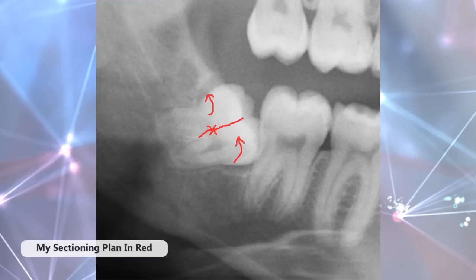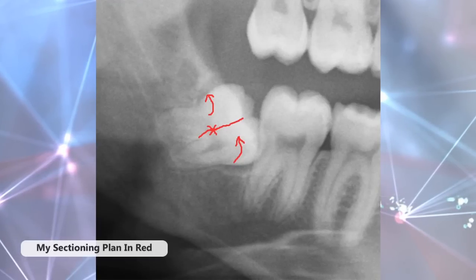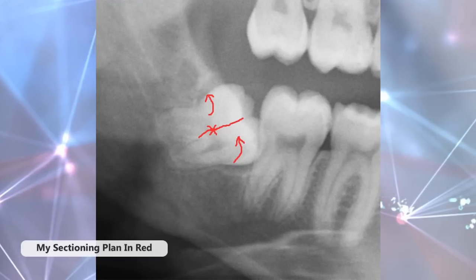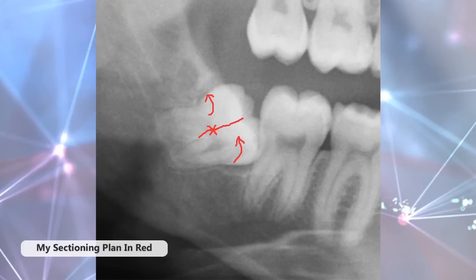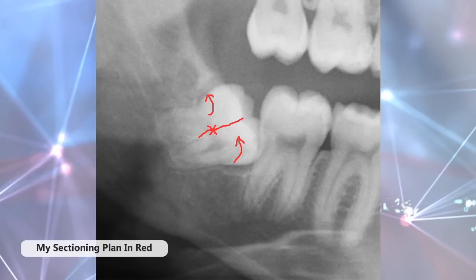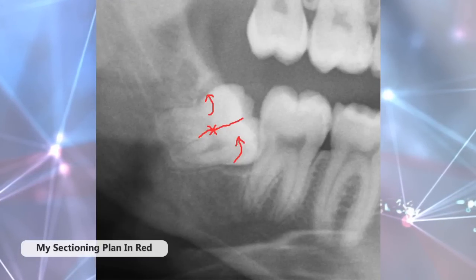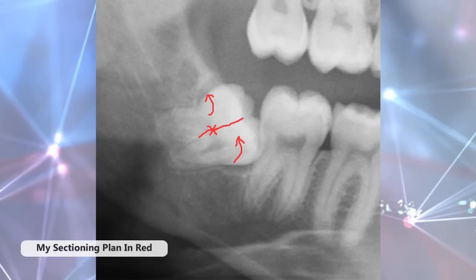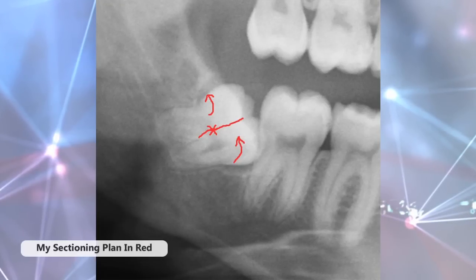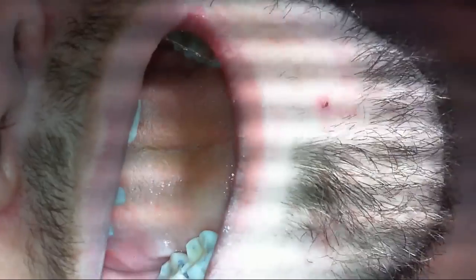This tells me where my bur is in relation to the tooth. As you can see, removing some of the distal cortical bone makes elevation of the distal part of the crown and root very easy. I'm going to share some tips along the way.